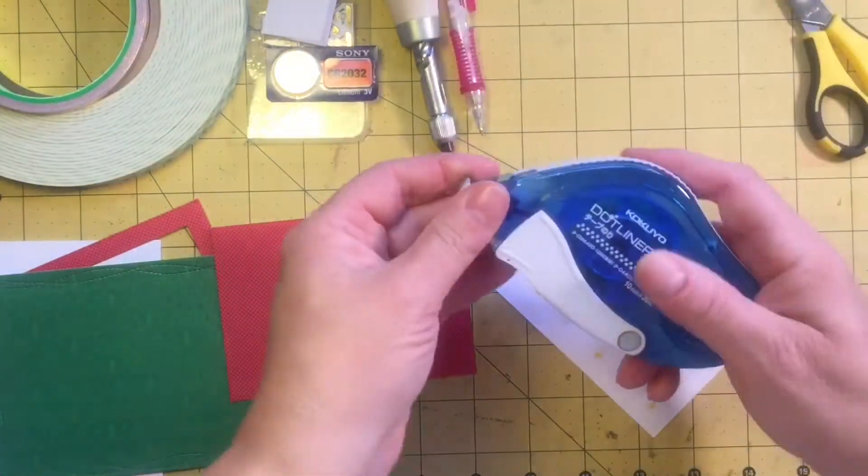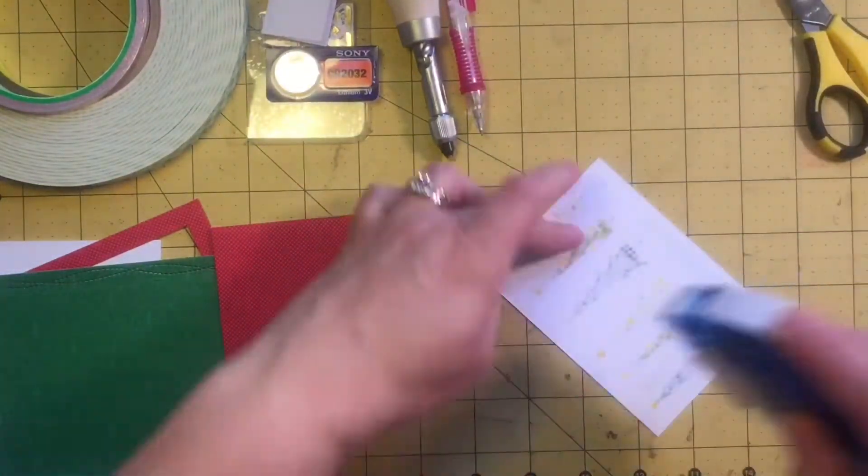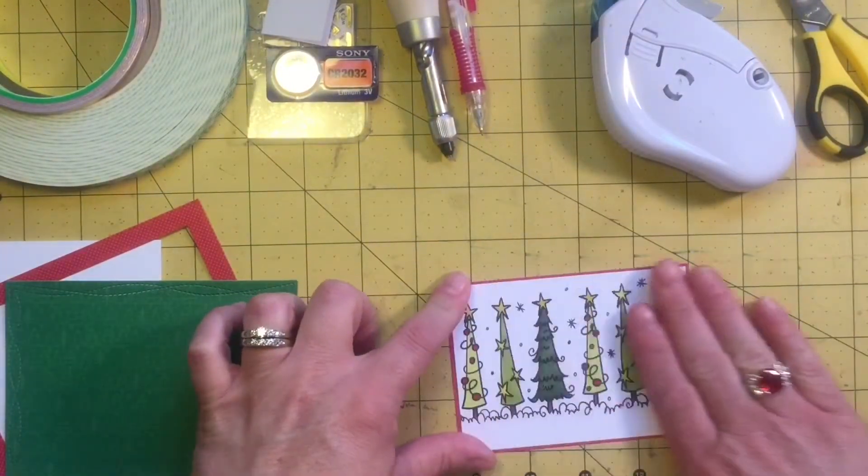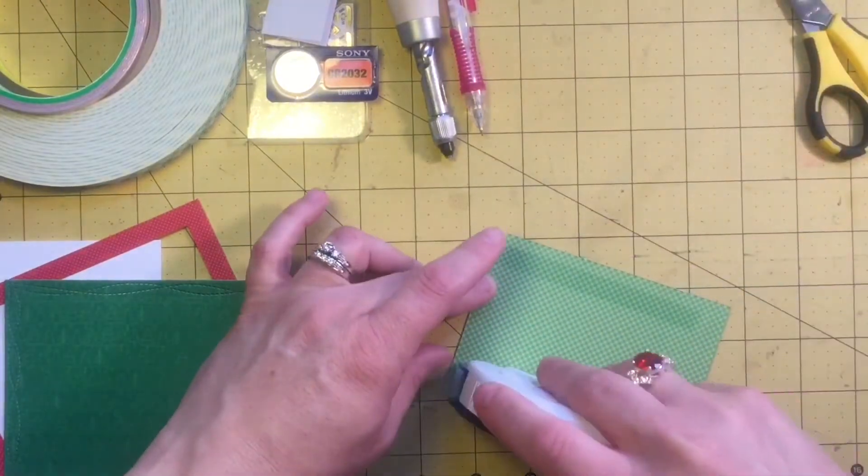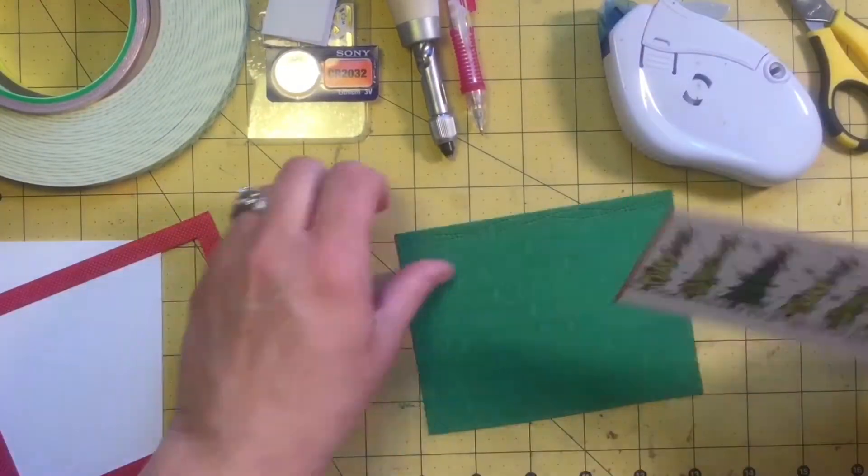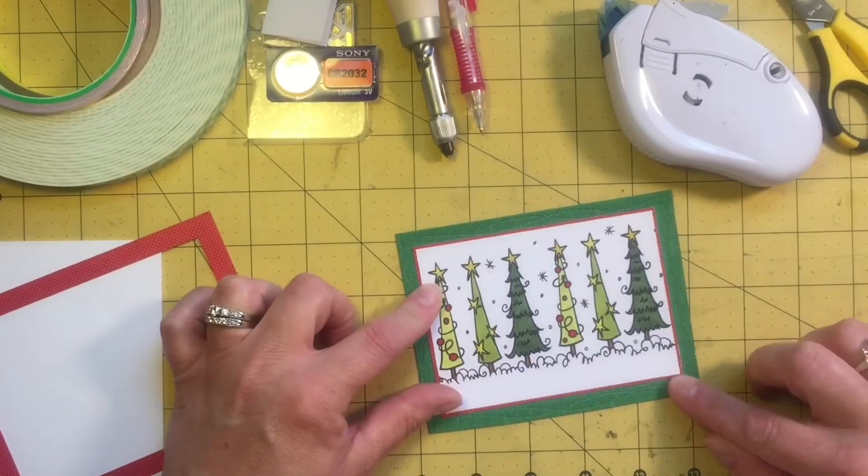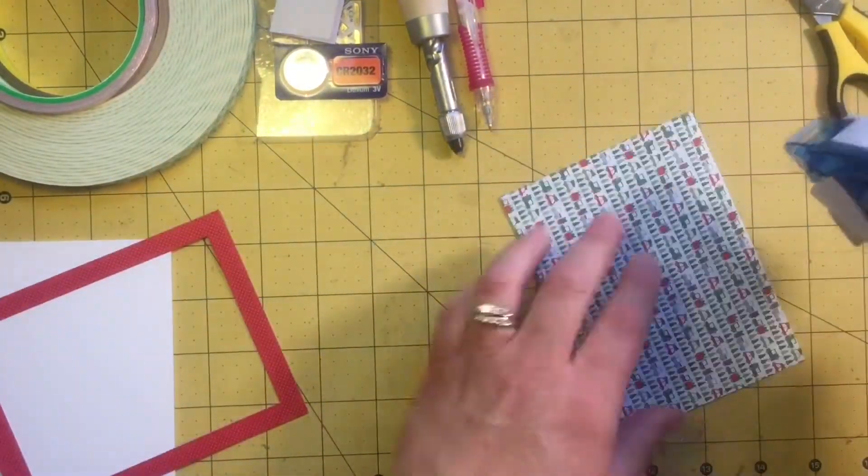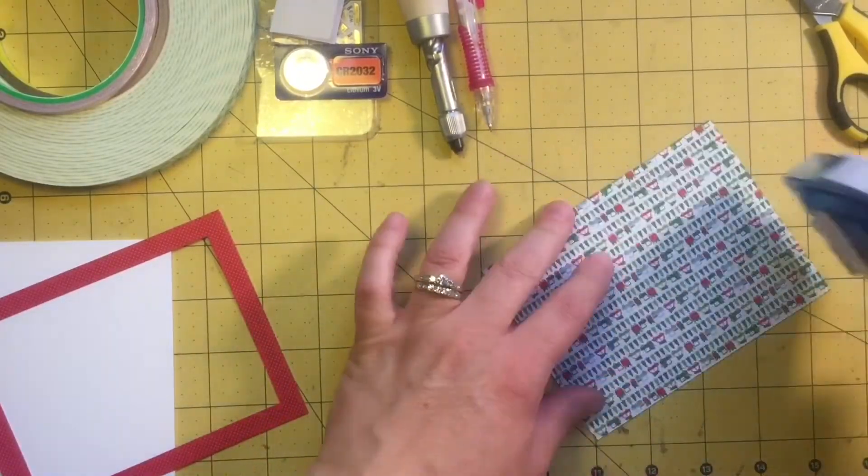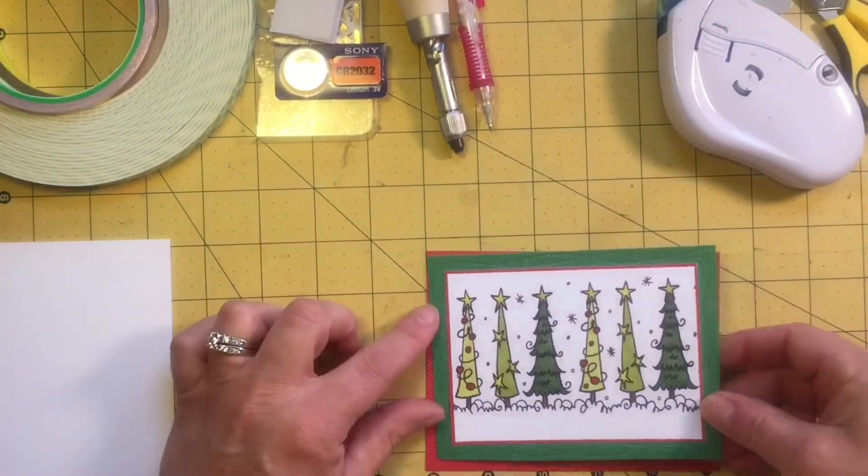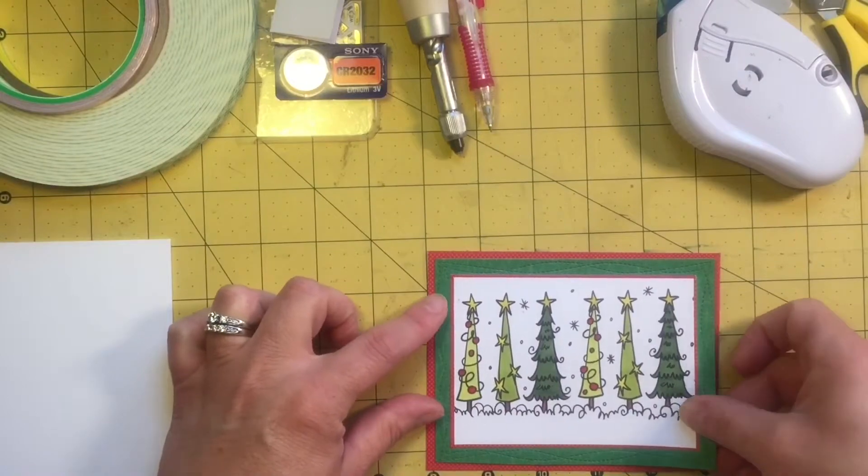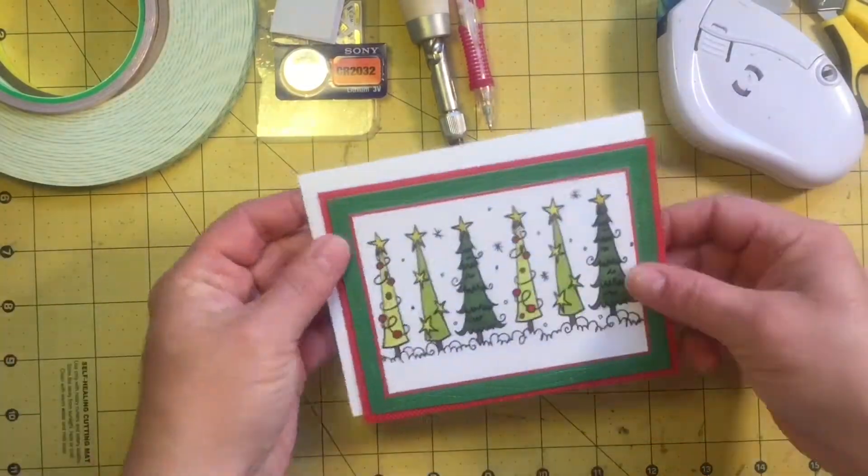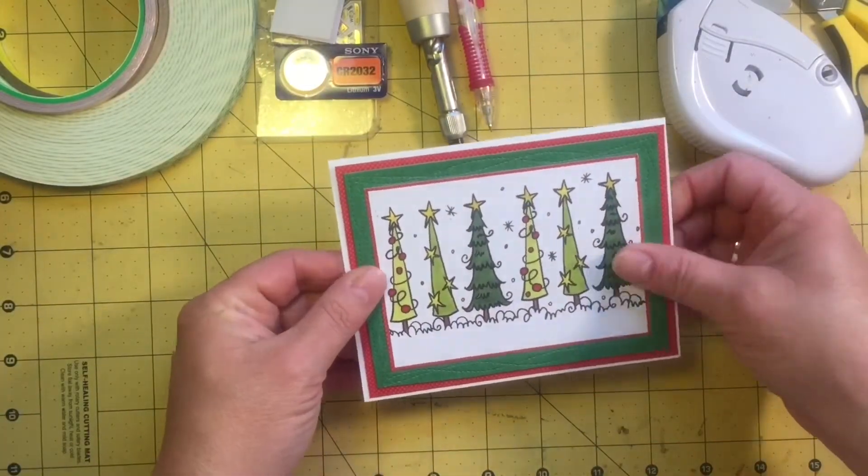We're going to go ahead and adhere these panels together. Everything I purchased was through Scrapping4Less besides the tape runner. This Kyoko tape runner, I know Teresa's trying to get it in, but at this point she is not carrying it. I do get mine off of Amazon. Once we get our panels layered up, then we will go ahead and get started on the fun stuff, and that's the lights.